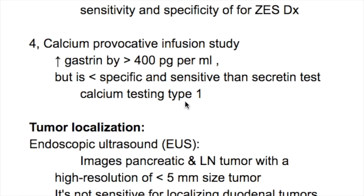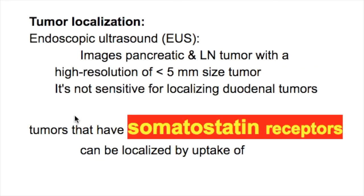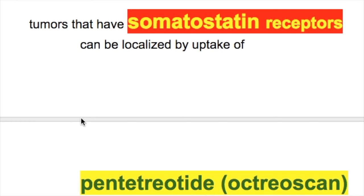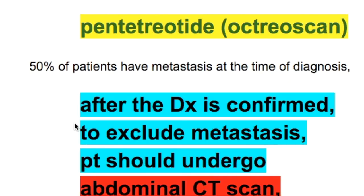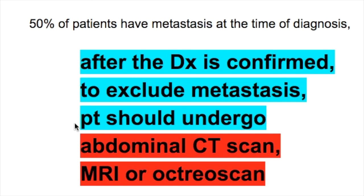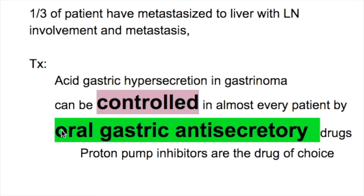For tumor localization, endoscopic ultrasound can image pancreatic and lymph node tumors with high resolution down to less than 5 mm, but it is not very sensitive for localizing duodenal tumors. Tumors with somatostatin receptors can be localized with pentatreotide (octreotide scan). Fifty percent of patients have metastasis at the time of diagnosis. To exclude metastasis after confirmed diagnosis, patients should undergo abdominal CT scan, MRI, or octreotide scan. If metastasis is excluded, exploratory laparotomy is performed. One-third of patients have metastasized to the liver with lymph node involvement.